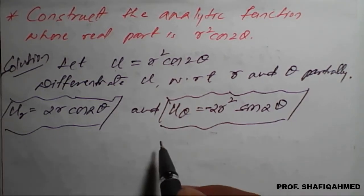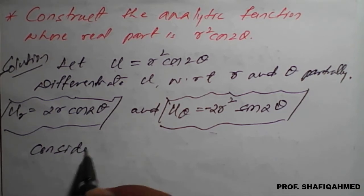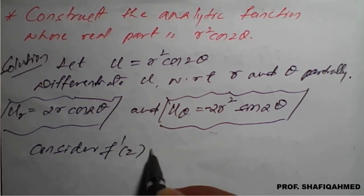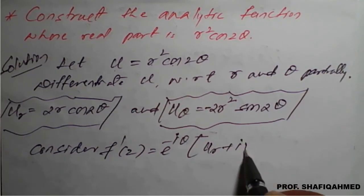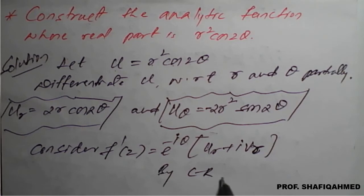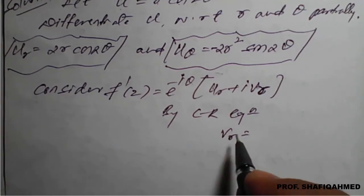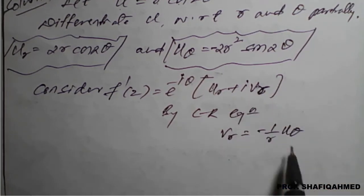Now, as per the procedure to get the analytic function for the polar form, we consider: f'(z) = e^(−iθ) · [u_r + i·v_r]. But we only know u_r and u_θ, not v_r. By the Cauchy-Riemann equation in polar form, v_r = −(1/r)·u_θ. So we replace v_r with −(1/r)·u_θ.